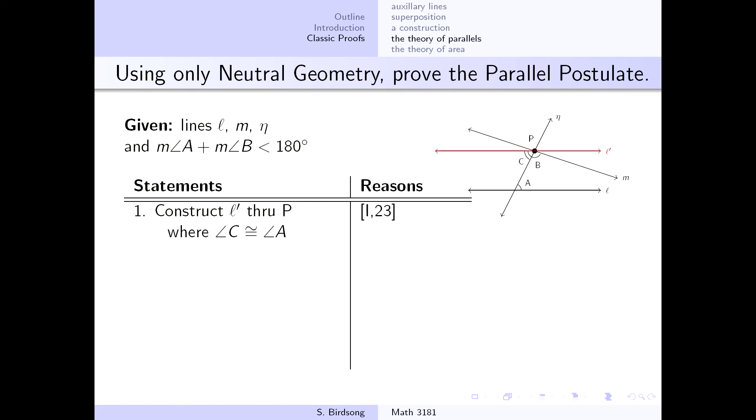where the angle here at C is going to be congruent to a new angle at C. Notice here what we just did. This is simply our proposition for copying a line segment, and we did this in such a way that we got alternate interior angles.